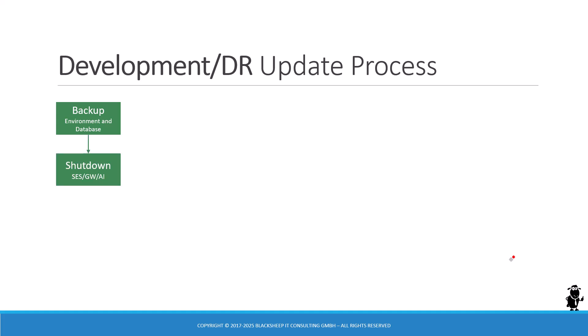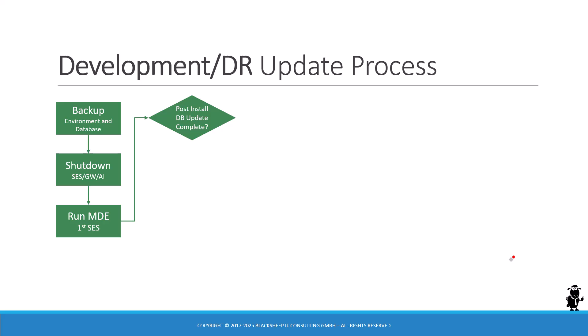You then have to start with a completely shut-down environment. Shut down the Siebel servers, gateways, AIs — and the debug server on development environments definitely needs to be shut down as well. Then you run the MDE installer in update mode on the first of the Siebel servers, because that includes the post-install database update. You might also want to consider running the post-install database update manually. Either way, you have to complete it, so check if the post-install database update is complete and retry until it runs. The post-install database update will update your database schema.